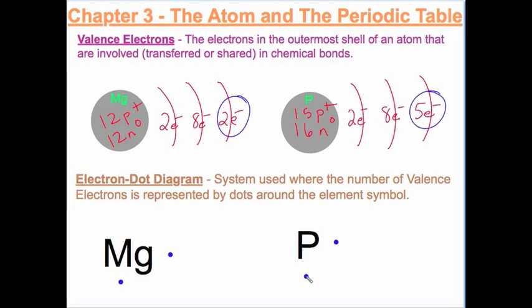Phosphorus has five valence electrons, so we put five dots. Once you have one dot on each side, you double up. For phosphorus that gives five dots total. If phosphorus had eight valence electrons, you'd fill all four sides with two each — but phosphorus only has five; that's just an example.